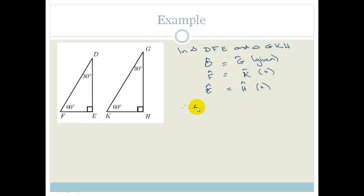Therefore, we can say that triangle D, F, E, is similar, three lines straight up is similar, similar to triangle G, K, H, and why, angle, angle, angle.